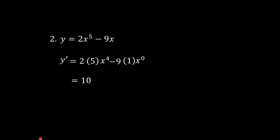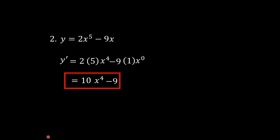Simplify: 2 times 5 is 10, so 10x raised to the exponent of 4. x raised to the exponent of 0 is equal to 1, so we have minus 9, because 9 times 1 times 1 is 9. The answer is 10x raised to the exponent of 4 minus 9.